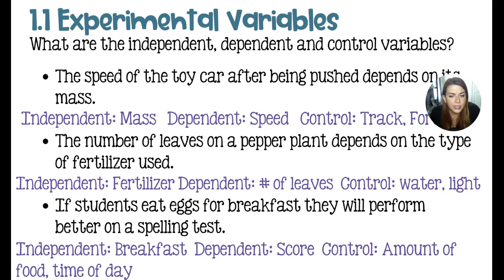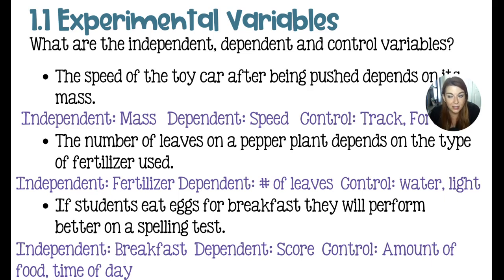Third up: if students eat eggs for breakfast, they will perform better on a spelling test. The independent variable is the breakfast they're eating — we are testing eggs versus some other thing, perhaps cereal or pop tarts. The dependent variable is going to be the score that the kids get on the spelling test. Controls include: the kids should eat the same amount of food, take the test at the same time of day, and take the same spelling test.